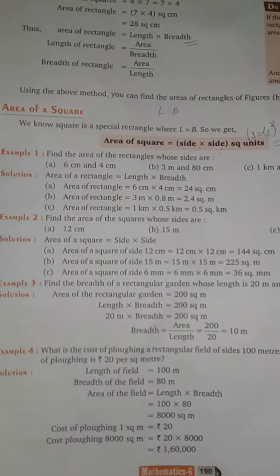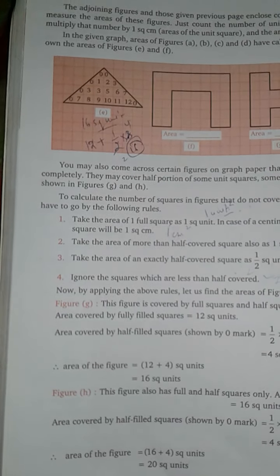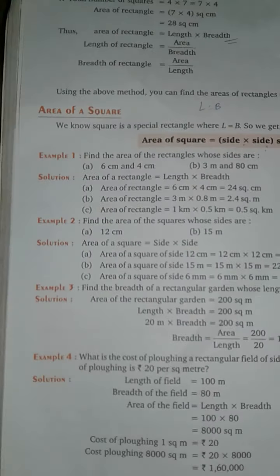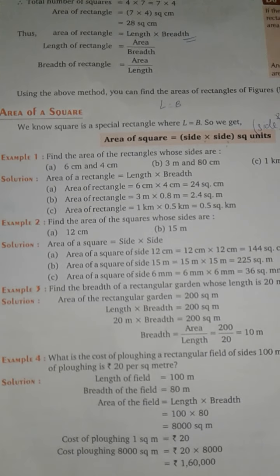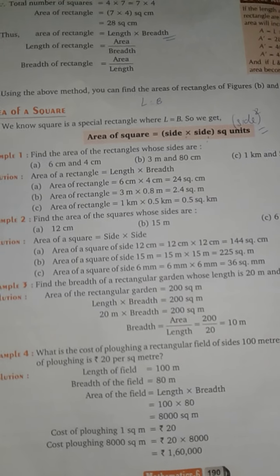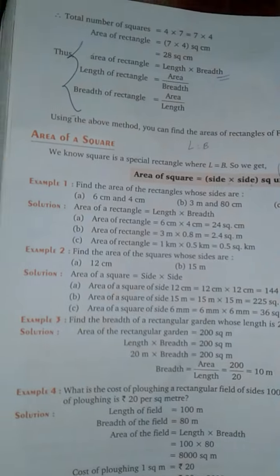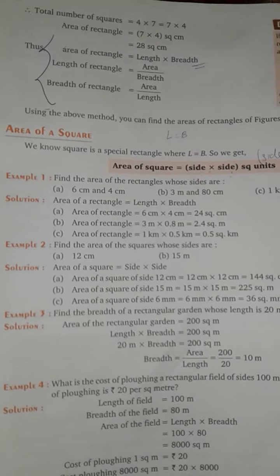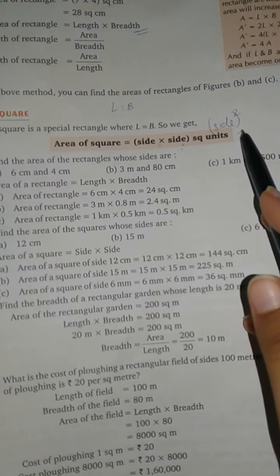Hello kids, today we will study the area. I hope you will understand the area and I will give you two formulas here. One is the area of rectangle, which is length into breadth. Then the area of square, which is side into side, which is side squared.